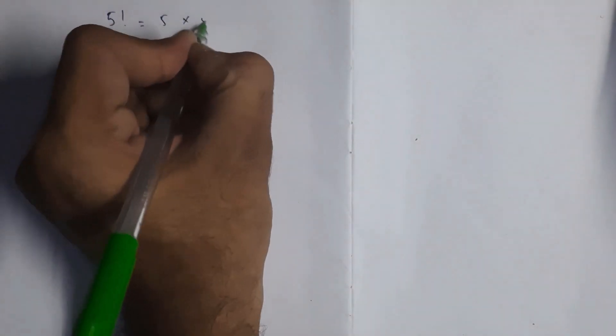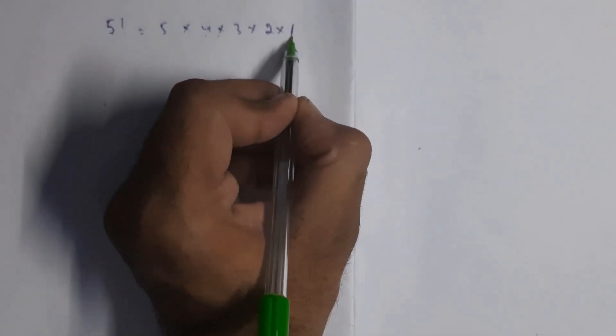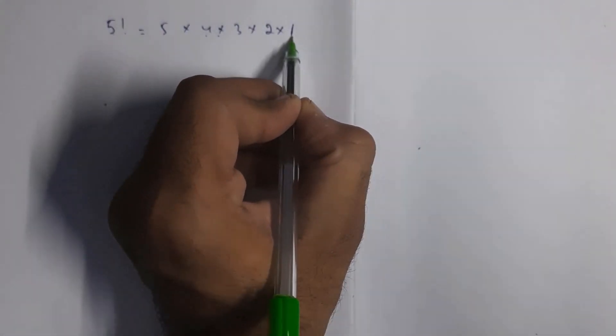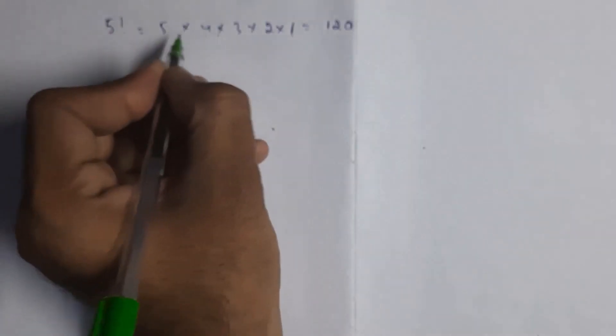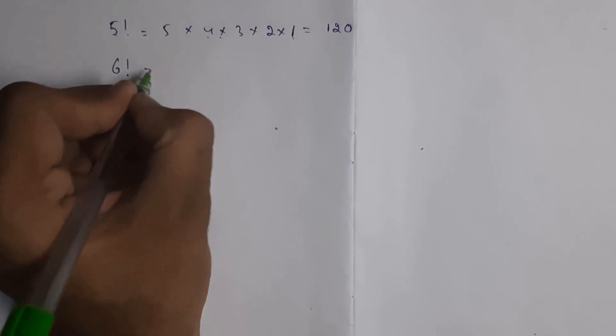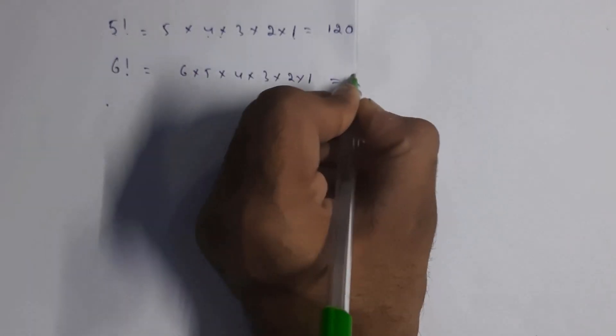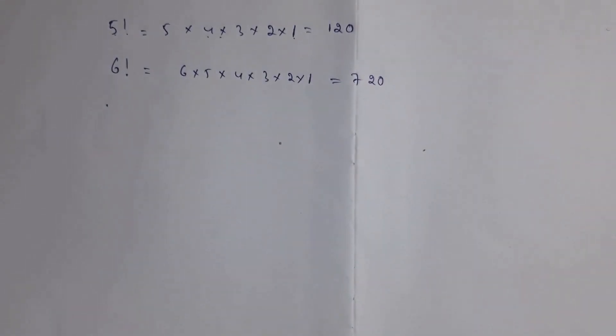Next I will explain how to find the factorial of a number using recursion. For example, five factorial is 5 × 4 × 3 × 2 × 1. You start from that number and keep multiplying by decrementing each value until you reach one, then you stop. The result is 120. For example, six factorial is 6 × 5 × 4 × 3 × 2 × 1, which is 720. This is how we find factorial.